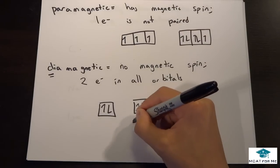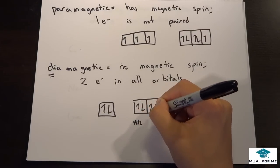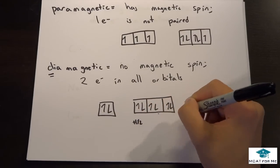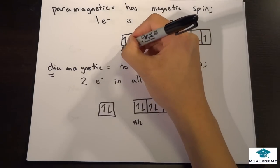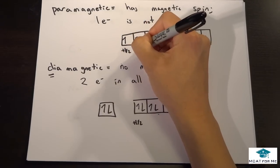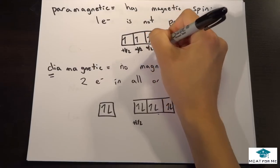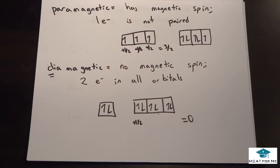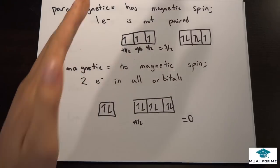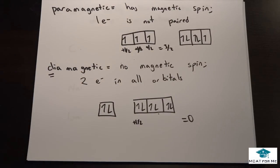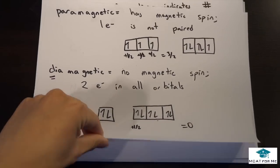if we were to add these up, so positive 1 half, minus 1 half, positive 1 half, minus 1 half, positive 1 minus, that would add up to zero. But if we did this one, we would get positive 1 half, positive 1 half, and positive 1 half, and so that would be 3 over 2 for the magnetic spin, or for the spin number. And so that would not be zero. So we know that the magnetic spin has to be zero if it is diamagnetic.